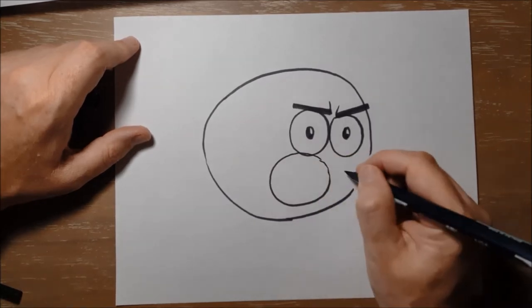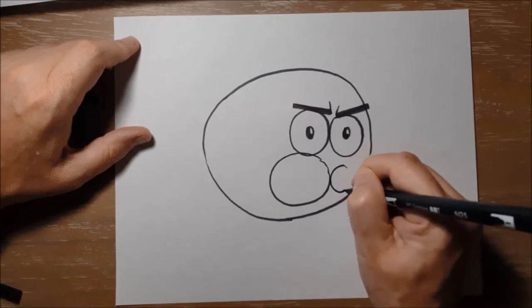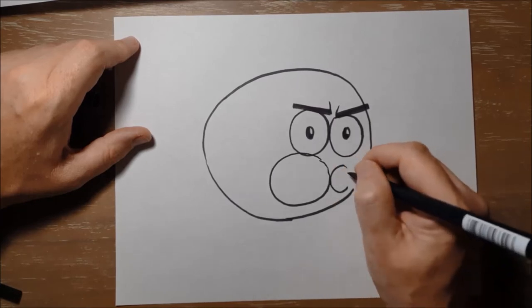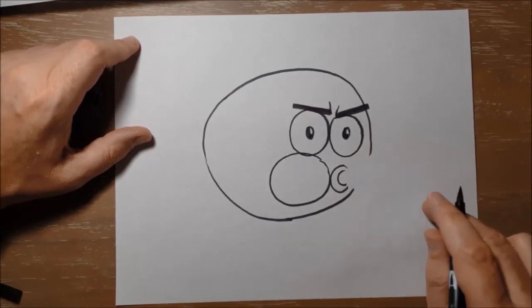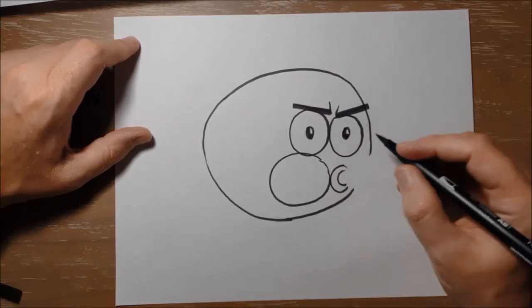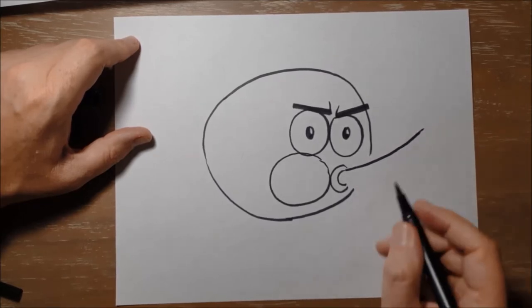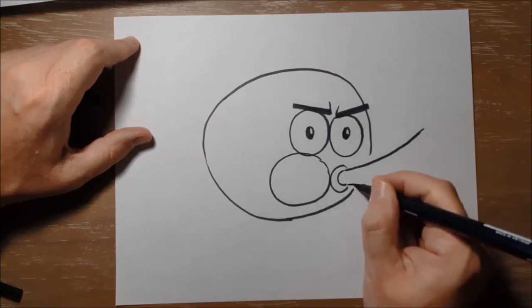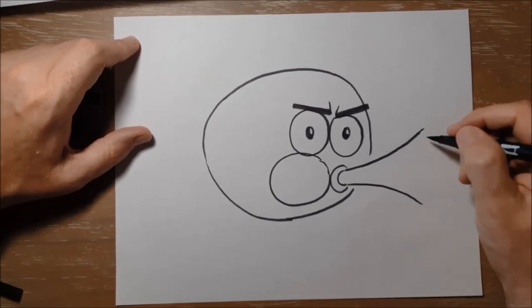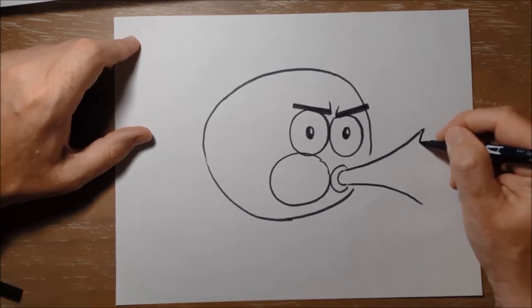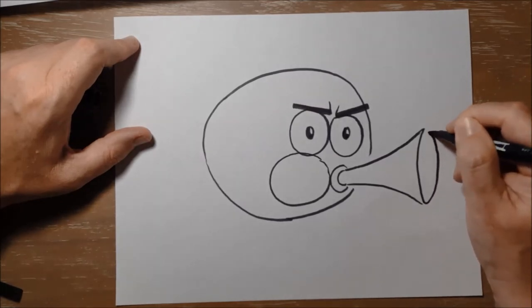The fish has a round mouth. Make a small circle next to the cheek, and one more small curving line. The fish has a loud horn. Make a long curving line, and another long curving line. The end of the horn is a circle. Make a long, thin circle.